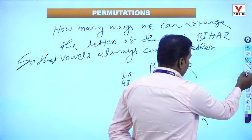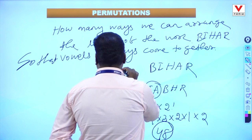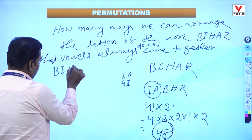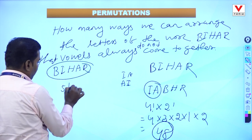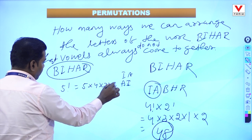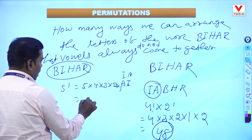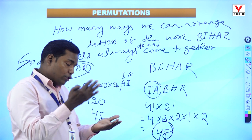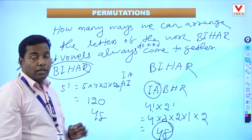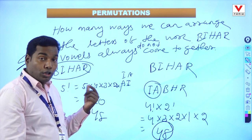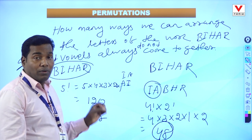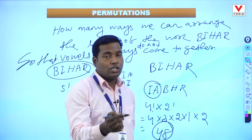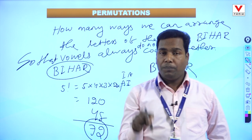Vowels always do not come together. The total arrangement of Bihar is 5 factorial = 120. Out of 120, 48 ways have vowels coming together. Both together and not together are included in 120. When we subtract 120 minus 48, we get 72. There are 72 ways the vowels do not come together when arranging the letters of the word Bihar.